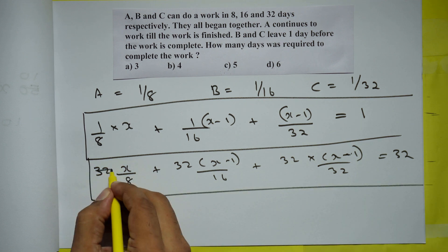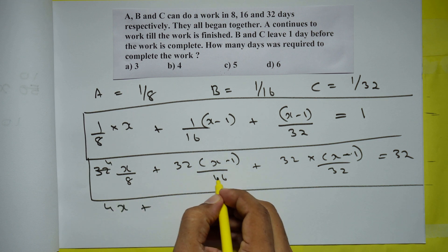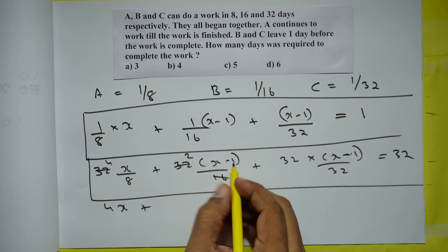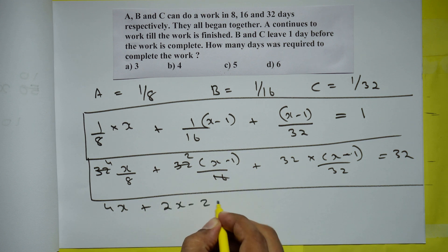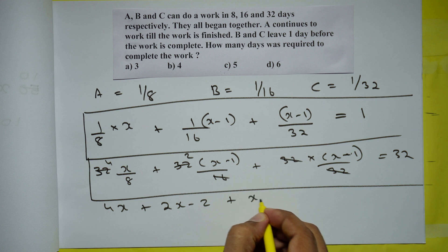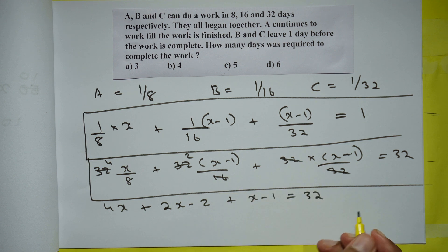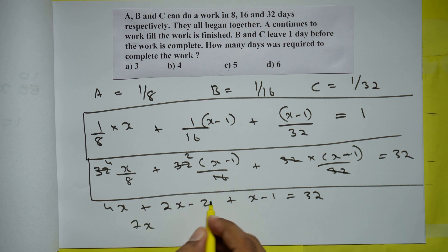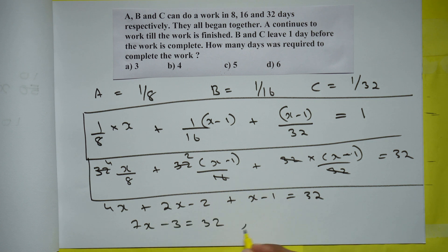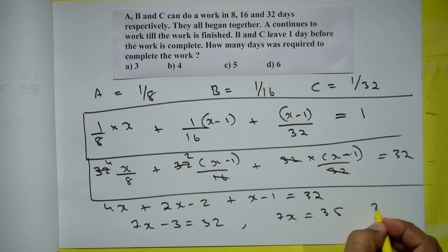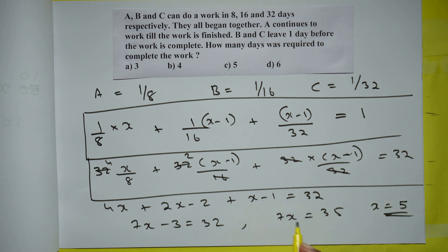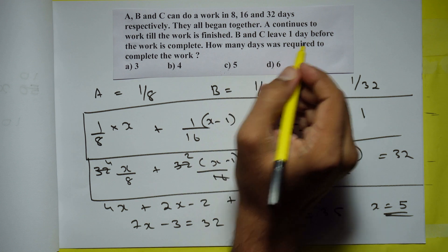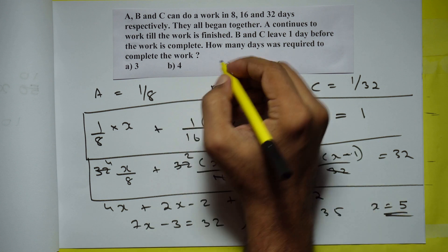Here 8 divides 4 times giving 4X; 16 divides 2 times giving 2(X−1), which is 2X minus 2; and 32 divides to give (X−1). So 4X plus 2X plus X minus 3 equals 32, giving 7X equals 35, so X equals 5. The work was completed in 5 days — option C.